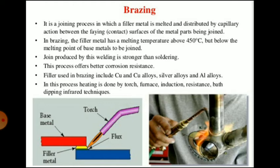The melting point of the filler metal is above 450 degrees Celsius but lower than the melting temperature of the parent metal. The filler material is distributed between the closely fitted surfaces of the joint by capillary action. Fluxes are also added into the braze joint to remove any oxides present or to prevent oxide formation.